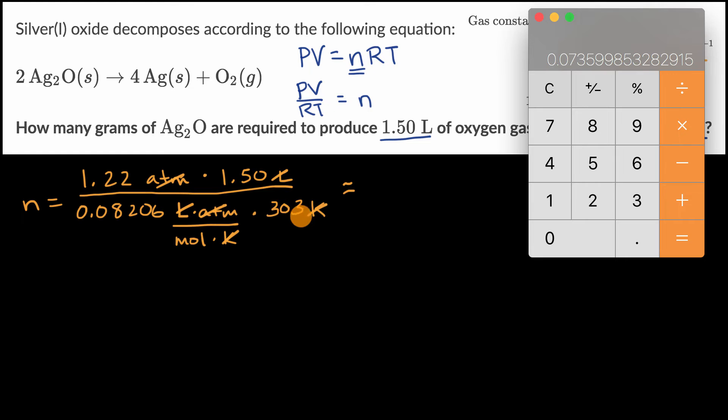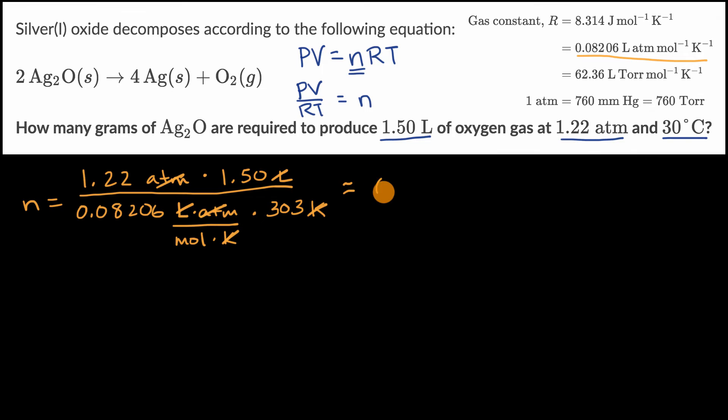Rounding to three significant figures gives 0.0736 moles of molecular oxygen that we need to produce.